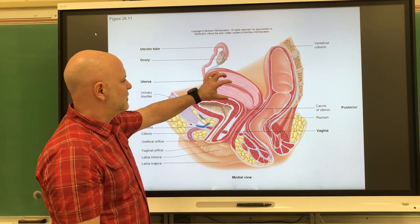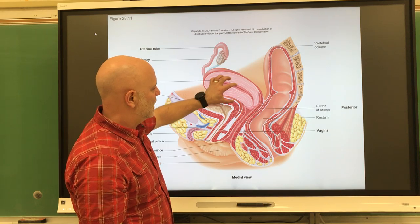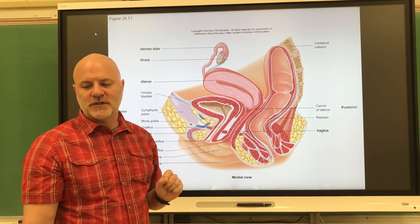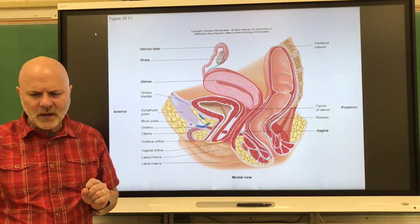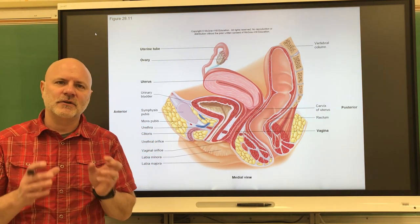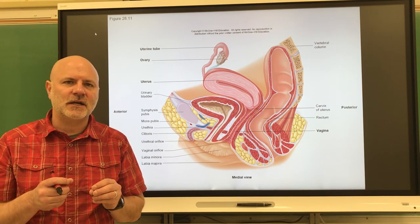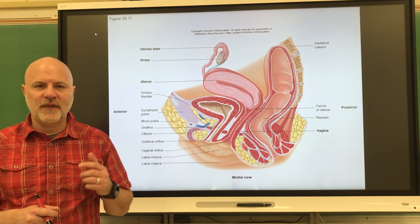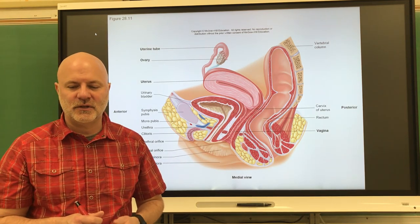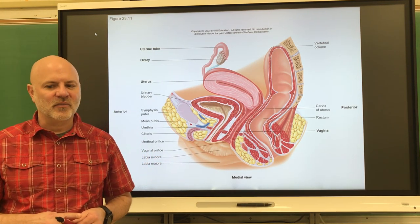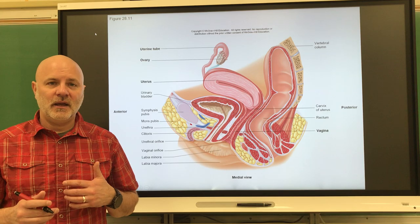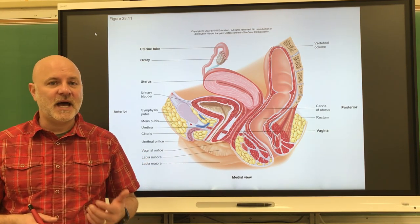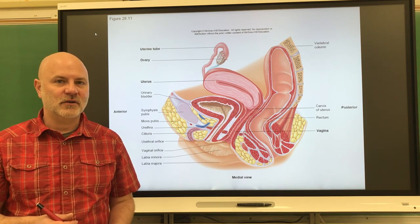One thing I forgot to mention is that the uterus actually tilts a little bit, making it easier for the sperm to enter there. There is no refractory period—you don't have arterioles in these areas vasoconstrict afterwards—so there is a possibility for multiple orgasms. As you probably already know, an orgasm is not necessary for fertilization to occur.